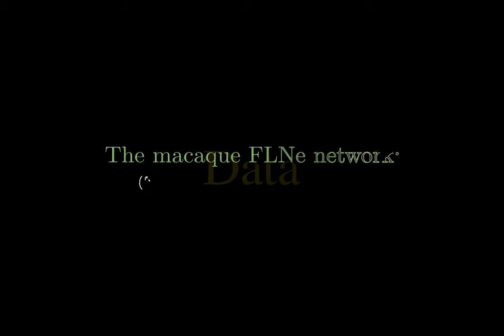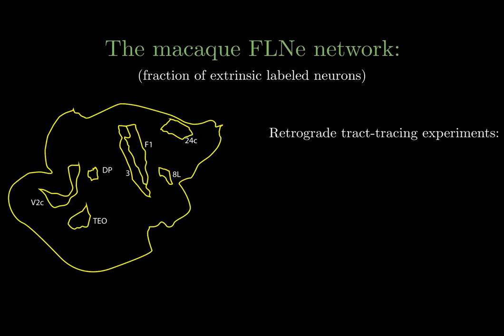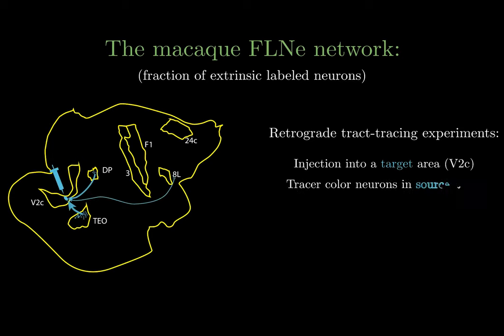First, let's talk about the data that we use for this analysis. We use the macaque efferent E network of fractions of extrinsic level neurons. The network is based on retrograde tract tracing experiments in which target areas are injected with a tracer which then colors the neurons in the source areas allowing us to count them.